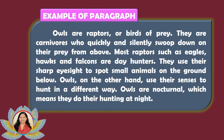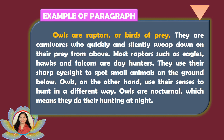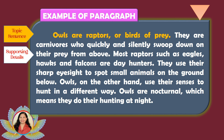First sample paragraph: 'Owls are raptors, or birds of prey. They are carnivores that quickly and silently swoop down on their prey from above. Most raptors such as eagles, hawks, and falcons are day hunters. Owls, on the other hand, are nocturnal — they do their hunting at night.' This paragraph follows an inverted pyramid structure using the deductive method, beginning with the general topic sentence and proceeding to specific supporting details explaining why owls are classified as raptors.